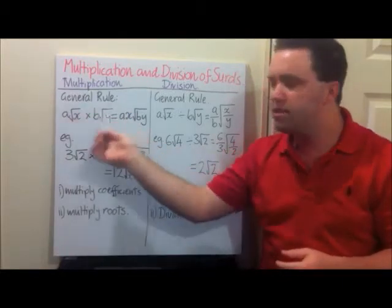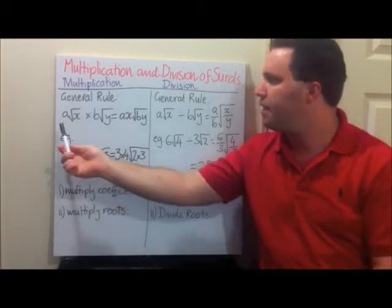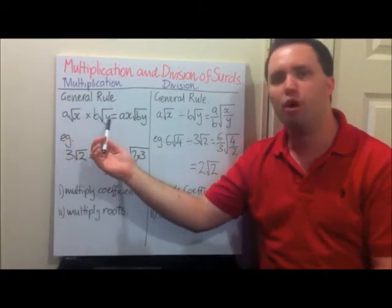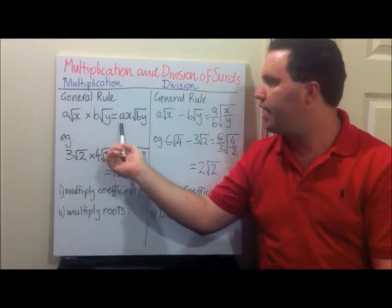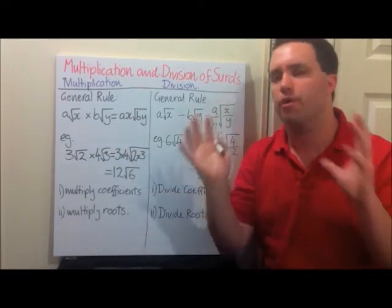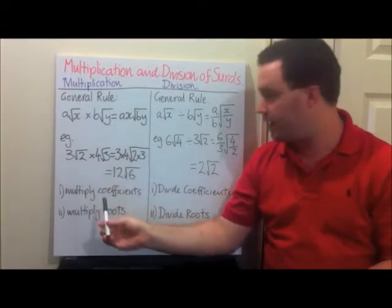When we're multiplying surds together, we have this general rule: if we have a√x times b√y, we're going to have ab√(xy). That's the general rule using pronumerals. Now I want you to see it with numbers.